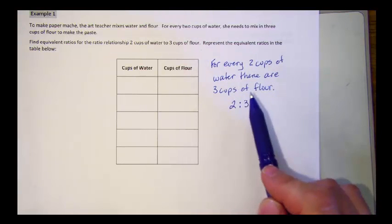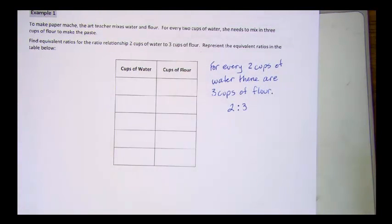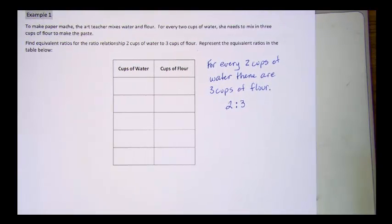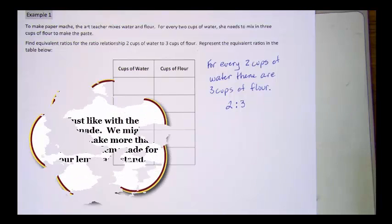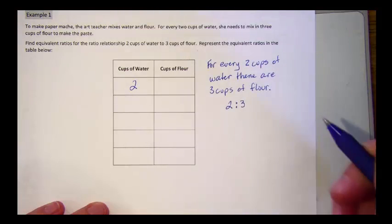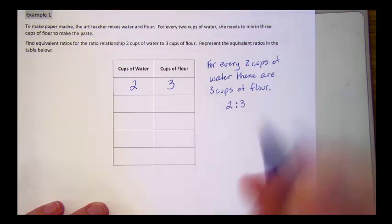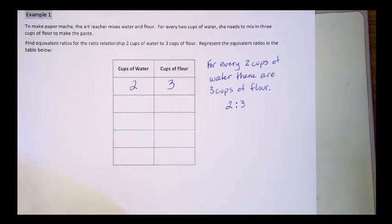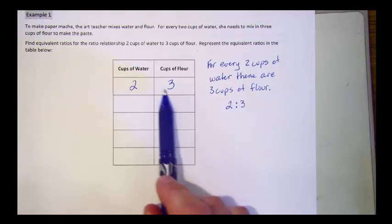It's worded this way because we might want more than just one batch of paper mache. We might want to make two batches or three batches or five batches, depending on how much we need to make. So we can start with the ratio two cups of water for every three cups of flour. Can we list all the possible recipes for this mixture and order in a table? Let's start with the ratio that uses the smallest whole numbers.